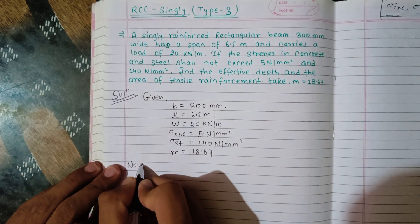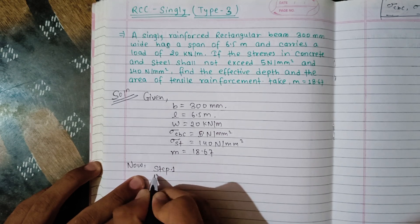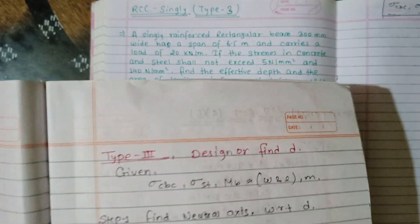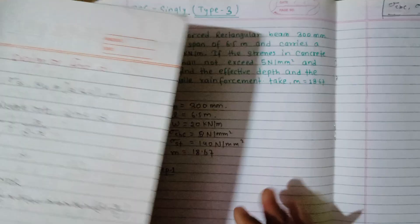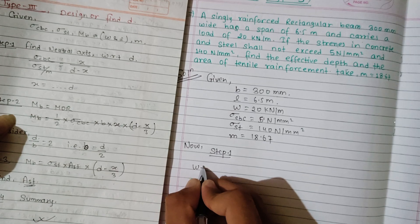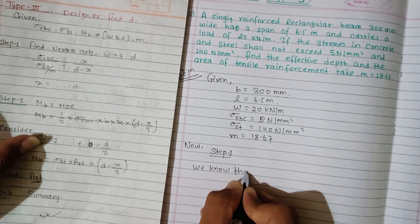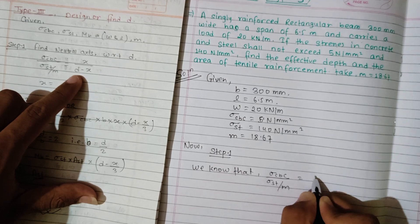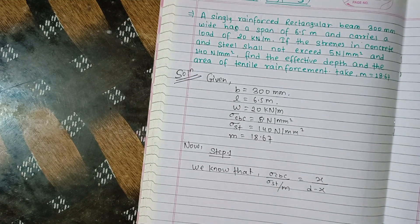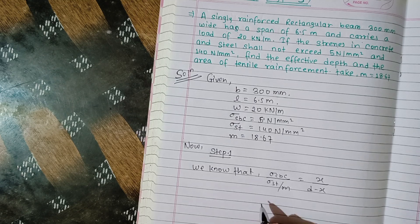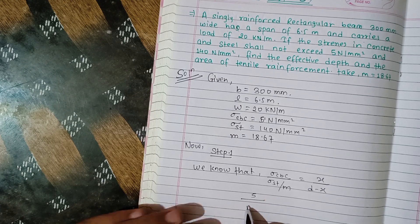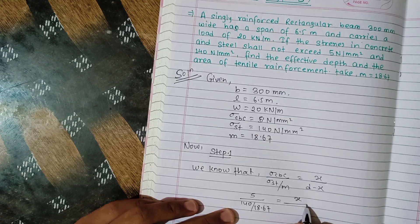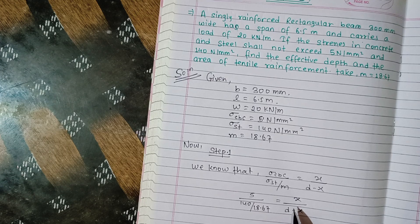Step one: find neutral axis with respect to d. We know that sigma_CBC / (sigma_ST / m) = x / (d − x). Applying values: sigma_CBC = 5, sigma_ST = 140, m = 18.67. So 5 / (140/18.67) = x / (d − x). Find x with respect to d.